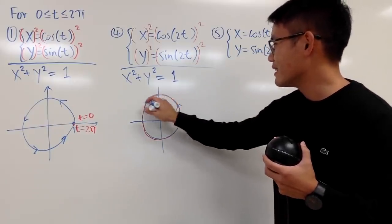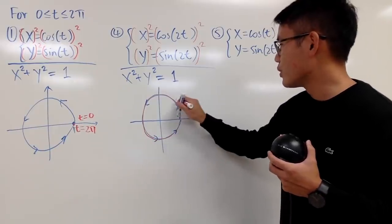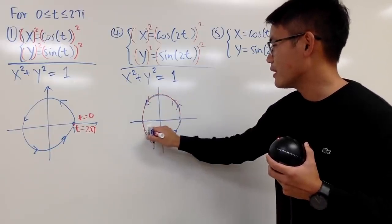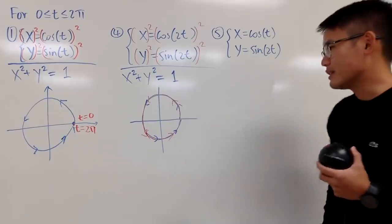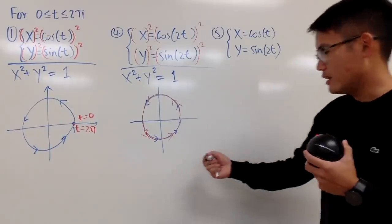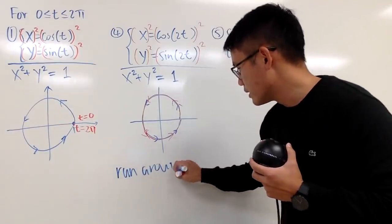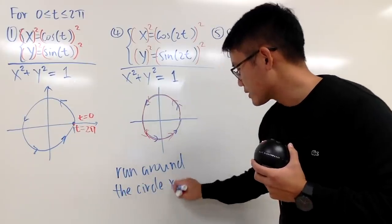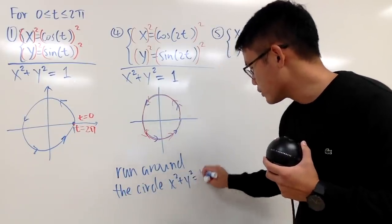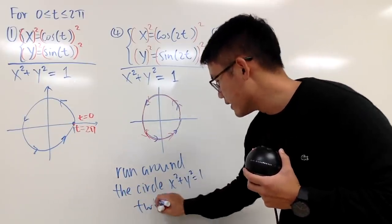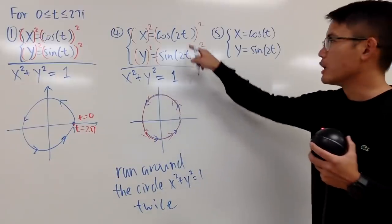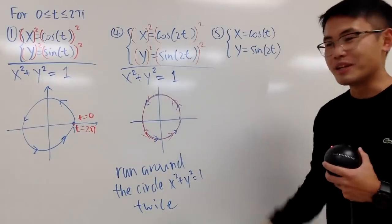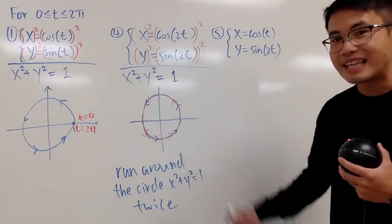So you actually do two full loops. You start at (1, 0), go counterclockwise once completing the circle at t = π, then continue for another full loop. You can imagine: if you multiply t by 7, you run around the circle 7 times in the same time period.